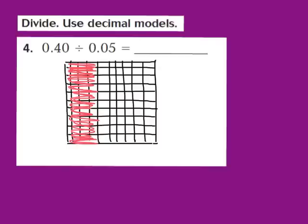You should now have your 40 hundredths shaded into your 10 by 10 grid — 10, 20, 30, and 40 hundredths shaded in. Step number 2 says we need to divide or break apart the model into groups that are each the size of our divisor. In this problem, our divisor is 5 hundredths, so our next step is to divide into equal groups that show 5 hundredths.